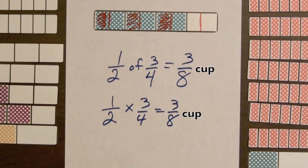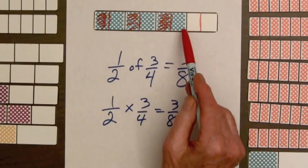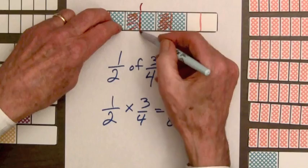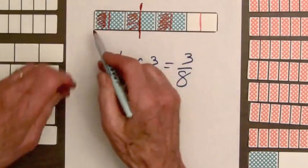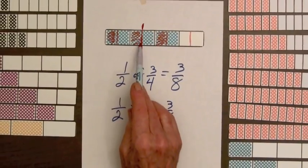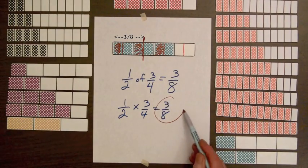Now another way to think about this, we have this three-fourths of a cup of blueberry juice. We could cut this right in half. That would mean cut the total shaded amount right in half. And so half of that is going to be one-fourth and a half of a fourth, which is an eighth. So again we get three-eighths for half of three-fourths.